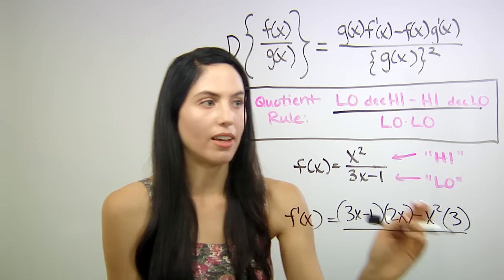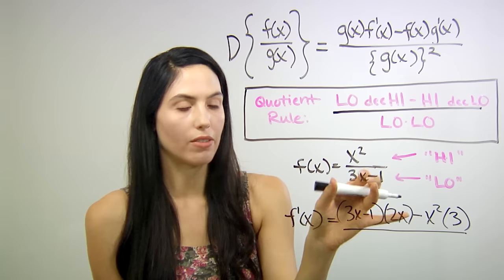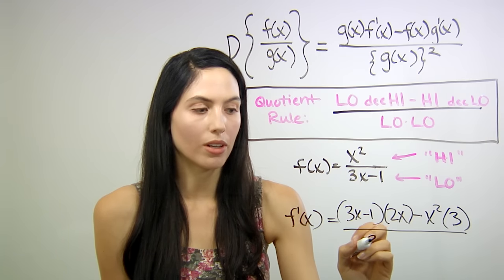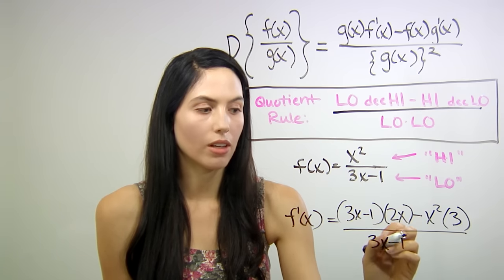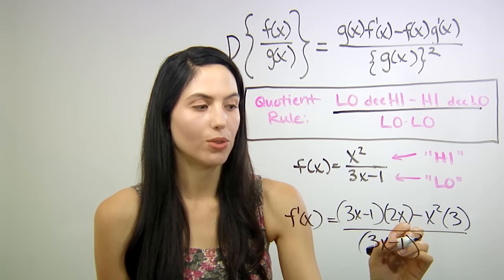All divided by low, low, just your bottom function times itself, 3x-1, times 3x-1, which can also be written as 3x-1 squared.